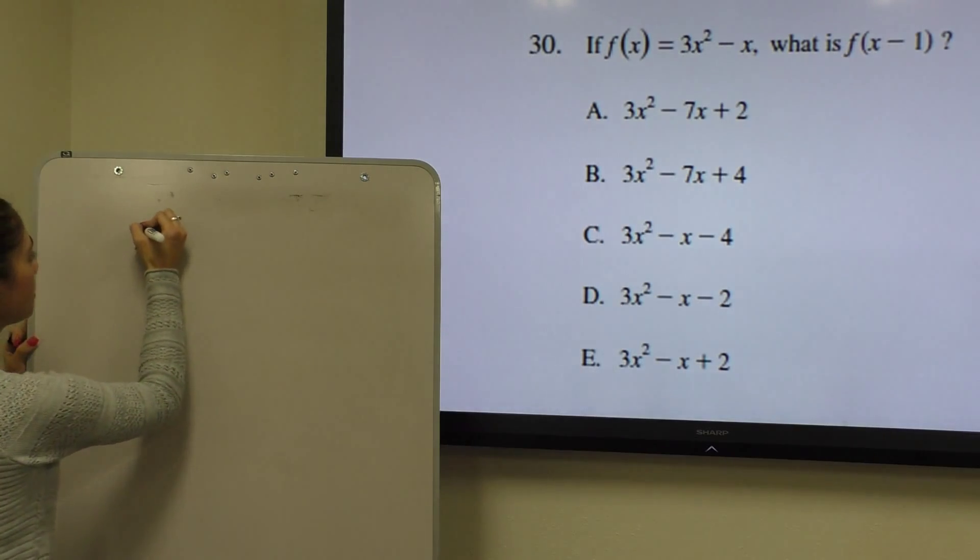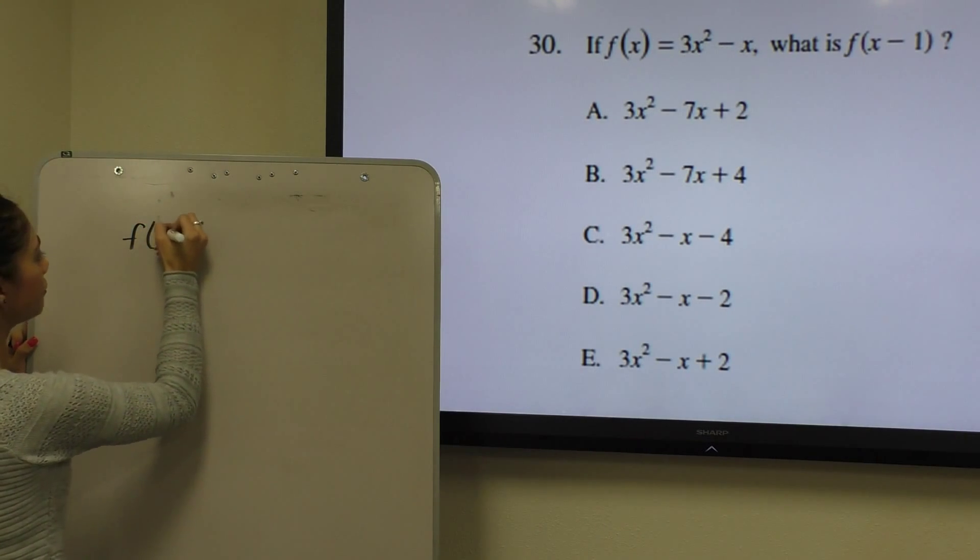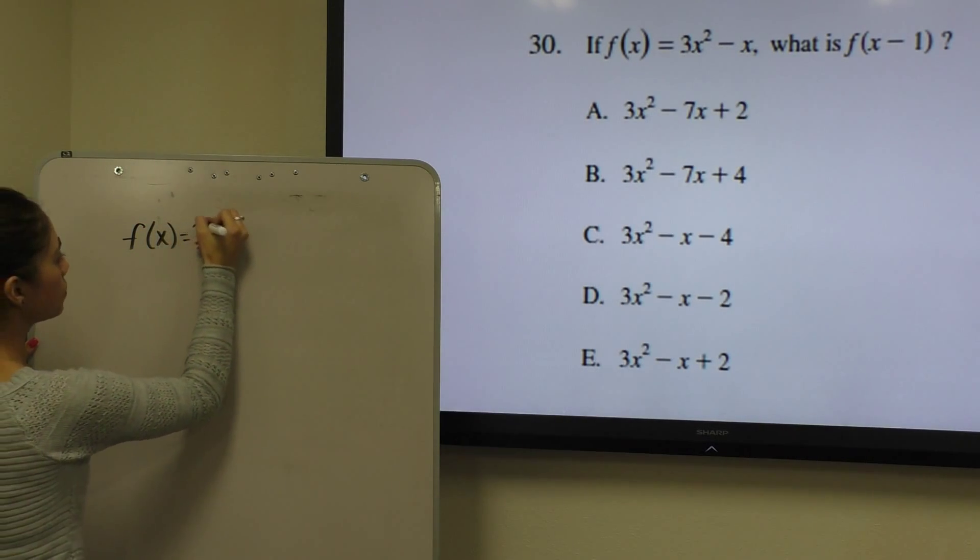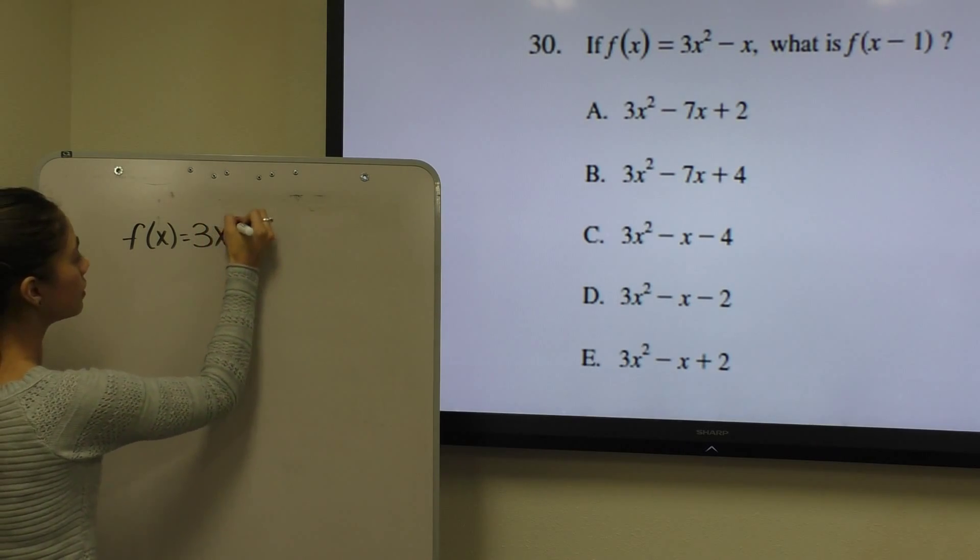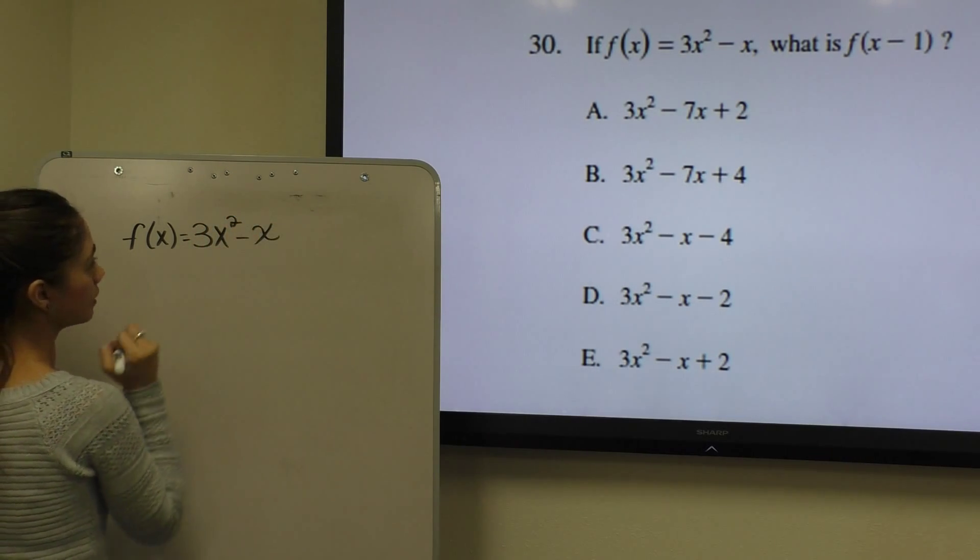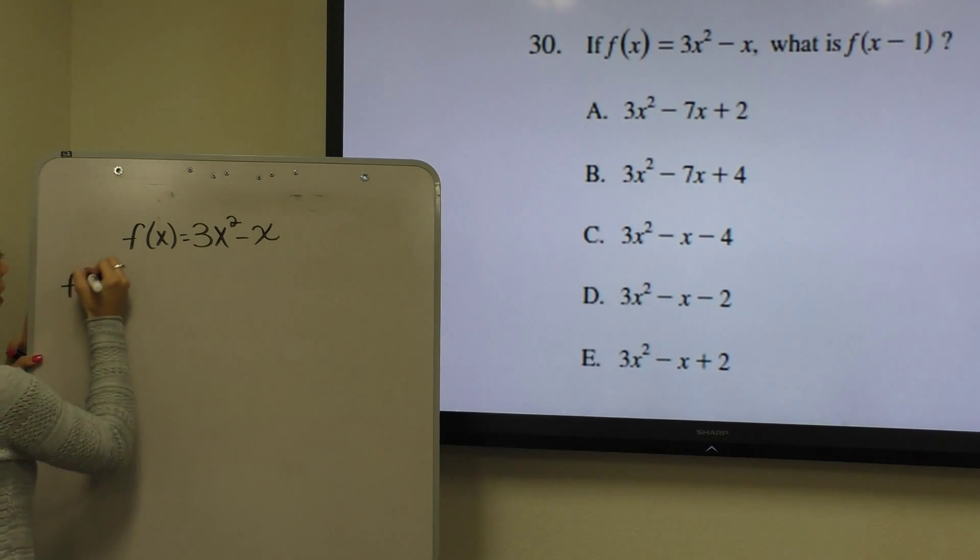So let's see, originally we had f of x equals 3x squared minus x, however they're asking for f of x minus 1.